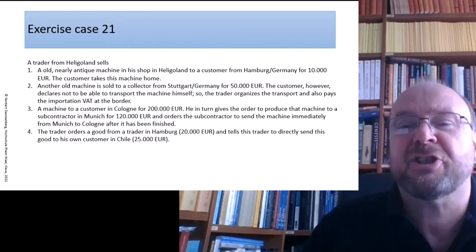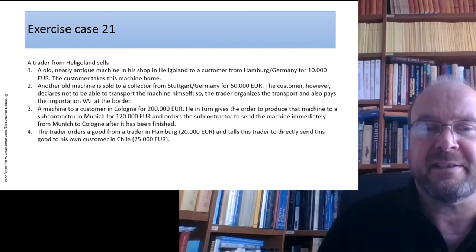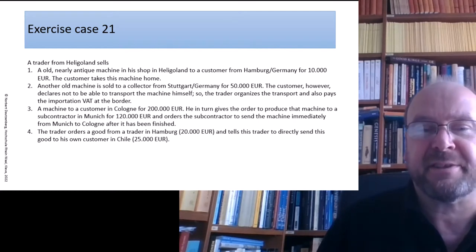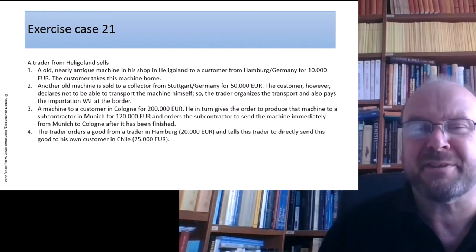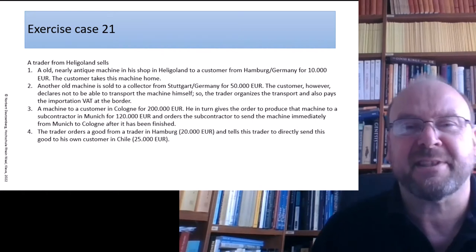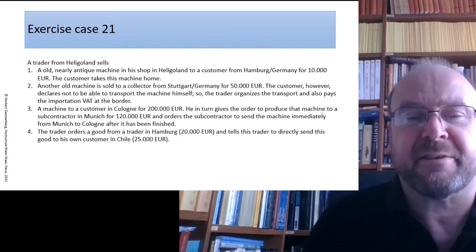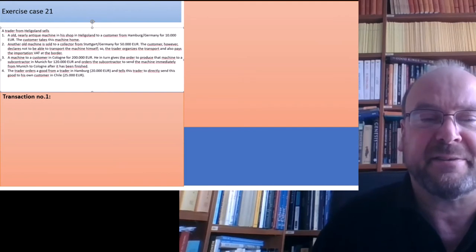The fourth event: the trader orders a good from a trader in Hamburg and tells this trader to send this good immediately and directly to his own customer in Chile for 25,000 Euro. He sold it to the customer in Chile. That is a rather complex case, because it consists of several events. So let's think about all these things.